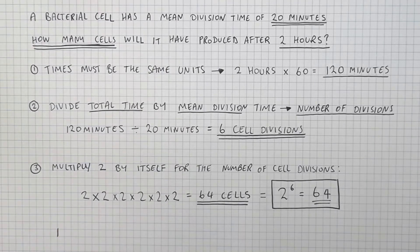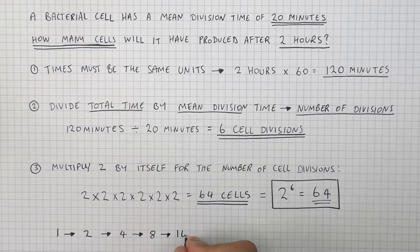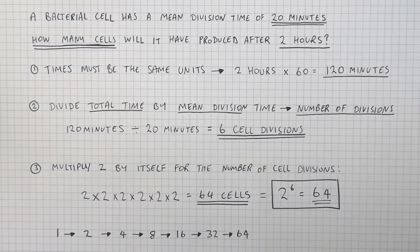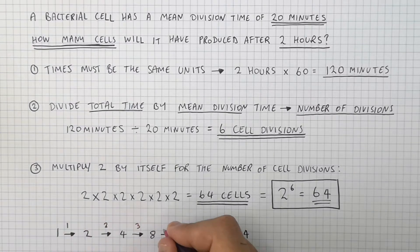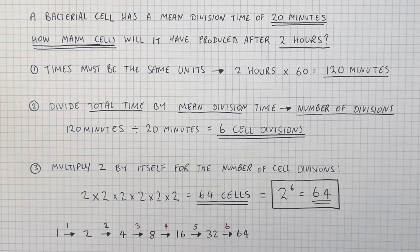Because we started off with 1 cell, which then divided into 2. Those 2 divided into 4. The 4 divided into 8. The 8 into 16. The 16 into 32. Then the 6th cell division, 64 cells are now present. It's the 1st cell division, 2nd cell division, 3rd, 4th, 5th, and 6th cell division. Each of these cell divisions taking 20 minutes each.